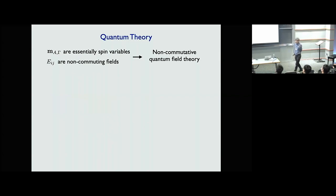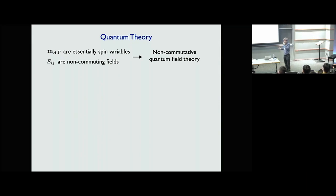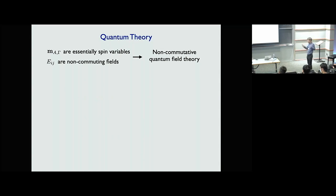Quantizing this is very difficult because the normal modes are spin variables. When you try to quantize, the rank-2 electric field tensor components are non-commuting fields — unlike ordinary electrodynamics where the electric field components commute. This makes it a very complicated quantum field theory, and in fact the general model cannot be solved.